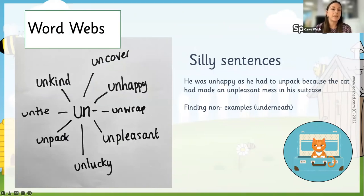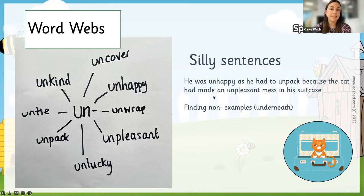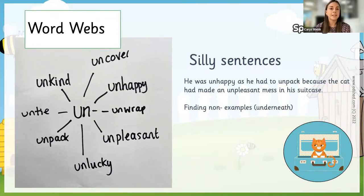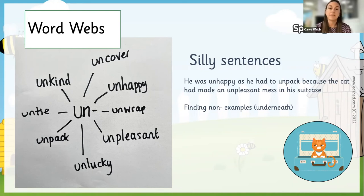Here's something else we use within our scheme — word webs. There are lots of different ways of recording words which have a particular prefix or suffix. We also have word ladders and silly sentences, using these words in context. There's also the activity of finding a non-example — these are all words where un is a prefix, whereas words like underneath show that although the first two letters are U and N, it doesn't work in the same way and we can't break the word into those morphemes. Getting children to find non-examples really helps them show their understanding of why something is or isn't a valid prefix or suffix.